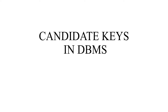Hello students. Today we are going to talk about what are the candidate keys in DBMS. In the last class, we just learned what are the primary keys in DBMS. Primary key is used to uniquely identify individual tuples in a relation, and every table or every relation has one primary key. In this class, we will learn what is meant by candidate keys and what are the properties of candidate keys.